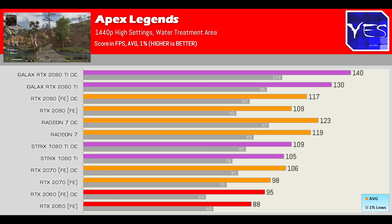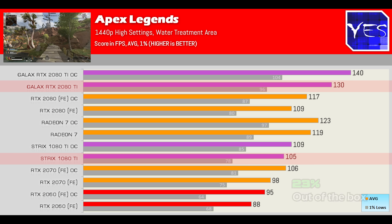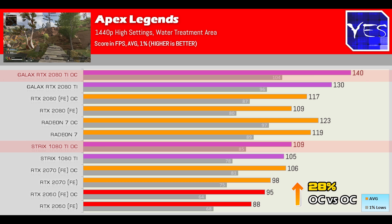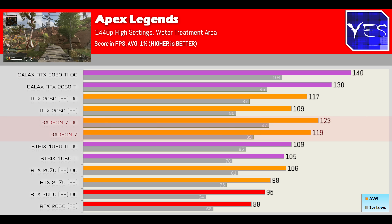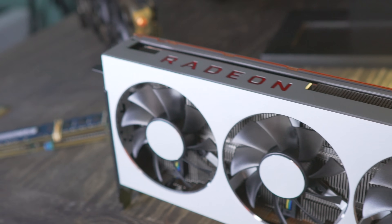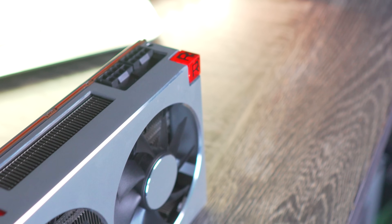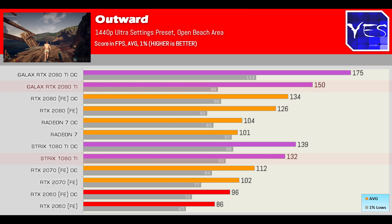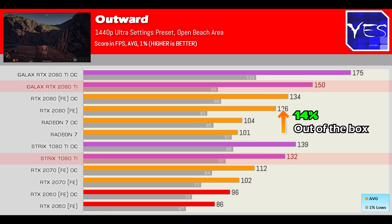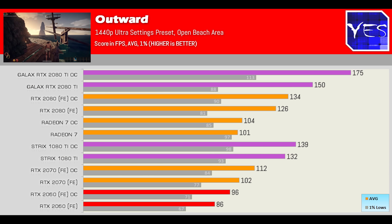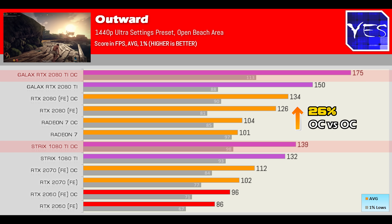Next up is Apex Legends, which is unfortunately capped at 144 frames. Even at 1440p max settings we saw a 23% boost, and then a 28% boost once overclocked. Interestingly, the Radeon 7 did very well in Apex Legends, so if that's your primary game it may be worth considering. Moving to Outward, that saw a 14% boost at 1440p max settings out of the box, and around 26% extra frames once we overclocked the 2080 Ti.